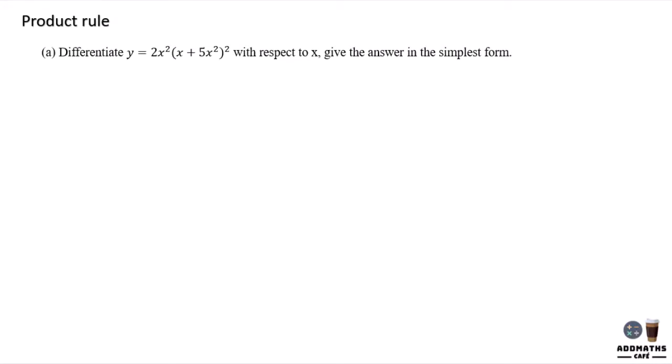Product rule. In differentiation, we are trying to solve a product function, which means that I have something times with something over here. So what I do here is I will have y equal u times v.